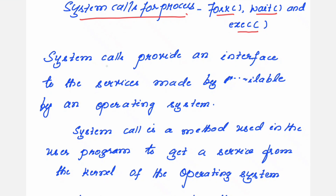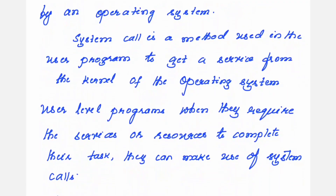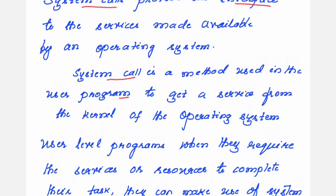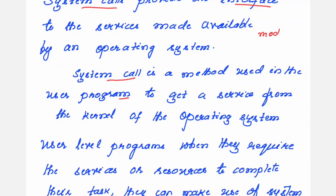What are system calls exactly? System calls provide an interface to the services made available by an operating system. In simpler words, it is a method used in the user program to get a service from the kernel of the operating system. Whatever programs the users are writing comes under the user mode, and we have another mode of execution called the kernel mode. The modes are two types: user mode and kernel mode.